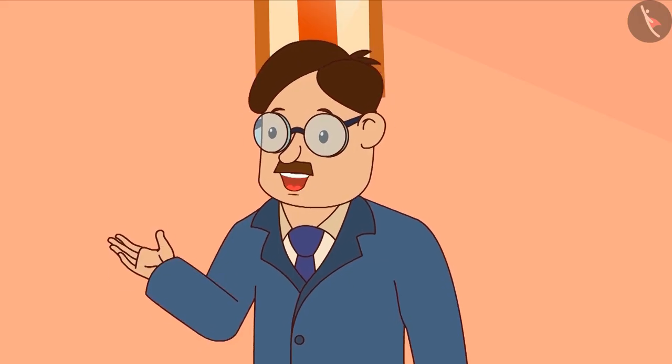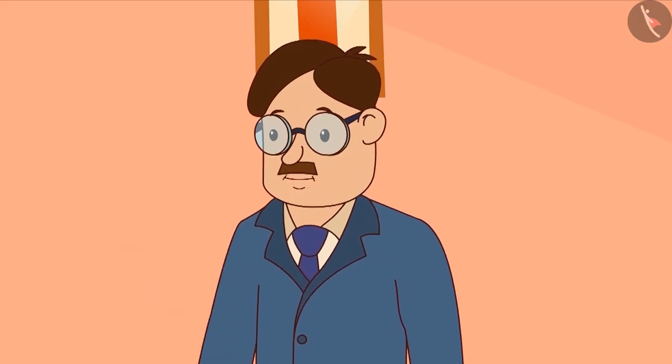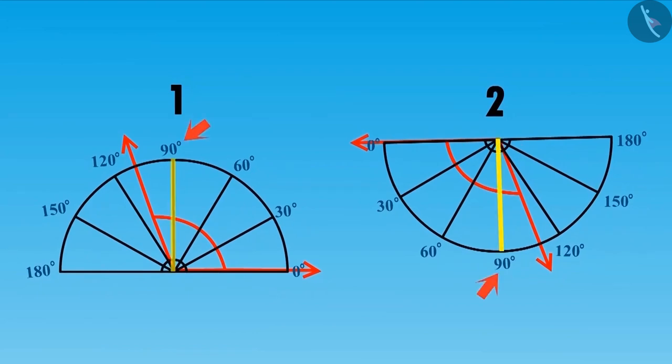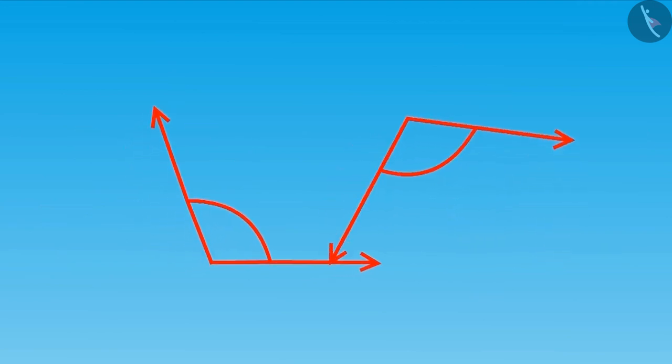To find out which angle is greater, let's measure both these angles using a protractor. Look at this. Both the angles are more than 90 degrees and less than 120 degrees and are almost showing the same angle. It means that both the angles are equal.